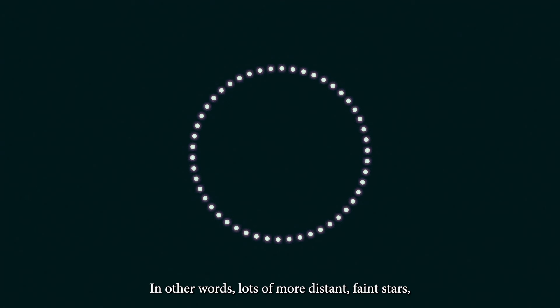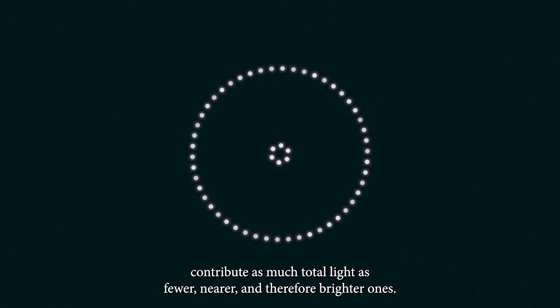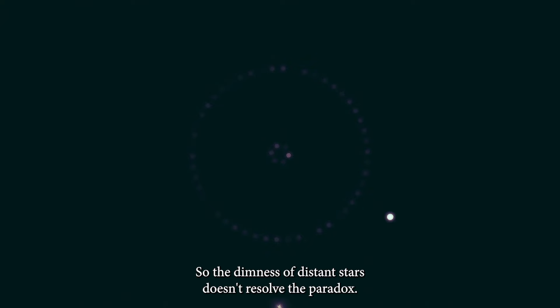In other words, lots of more distant, faint stars contribute as much total light as fewer, nearer, and therefore brighter ones. So the dimness of distant stars doesn't resolve the paradox.